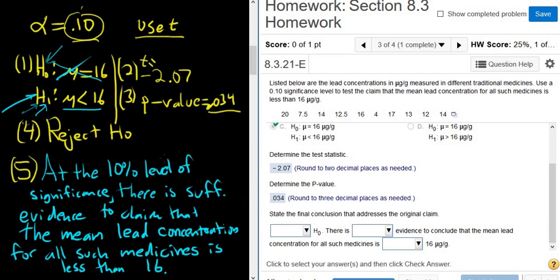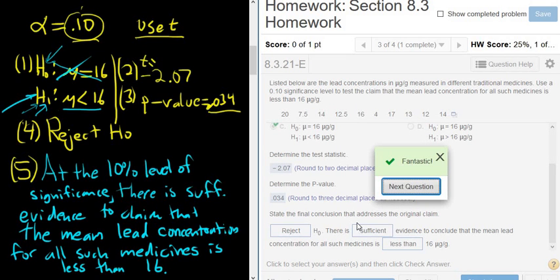And the final conclusion. So we rejected the null hypothesis. So there is sufficient evidence to conclude that the mean lead concentration for all such medicines is less than. So it matches pretty much exactly what we have written down. Let's try it. And that's it. I hope that was helpful.